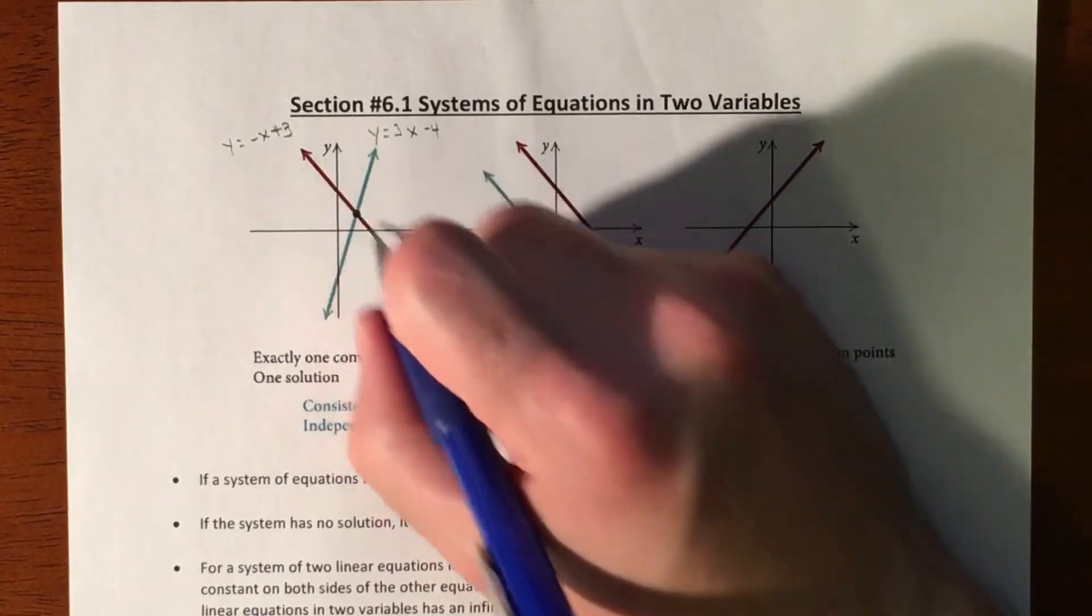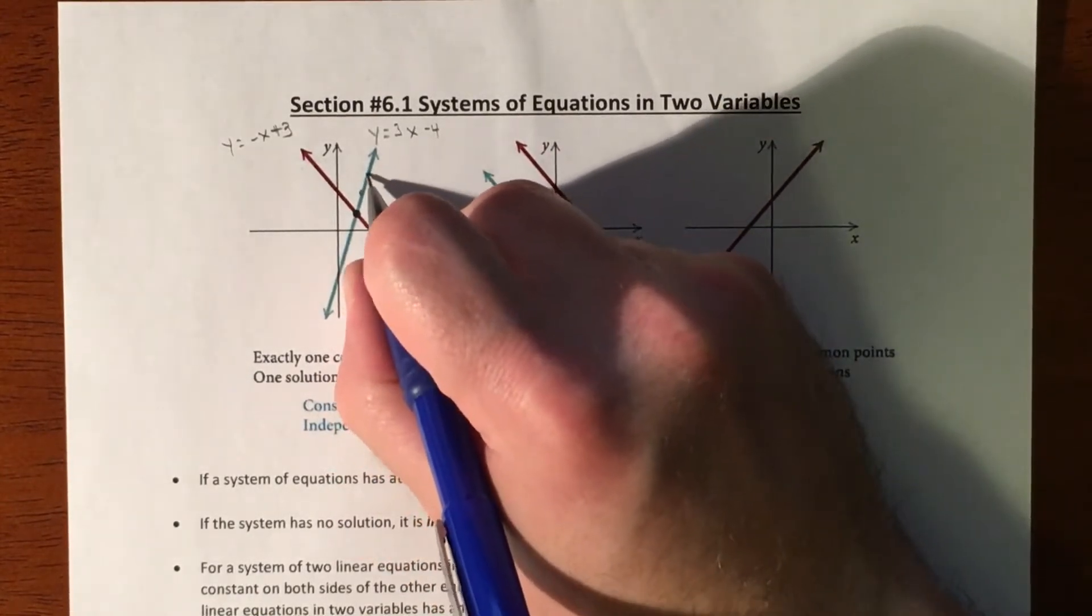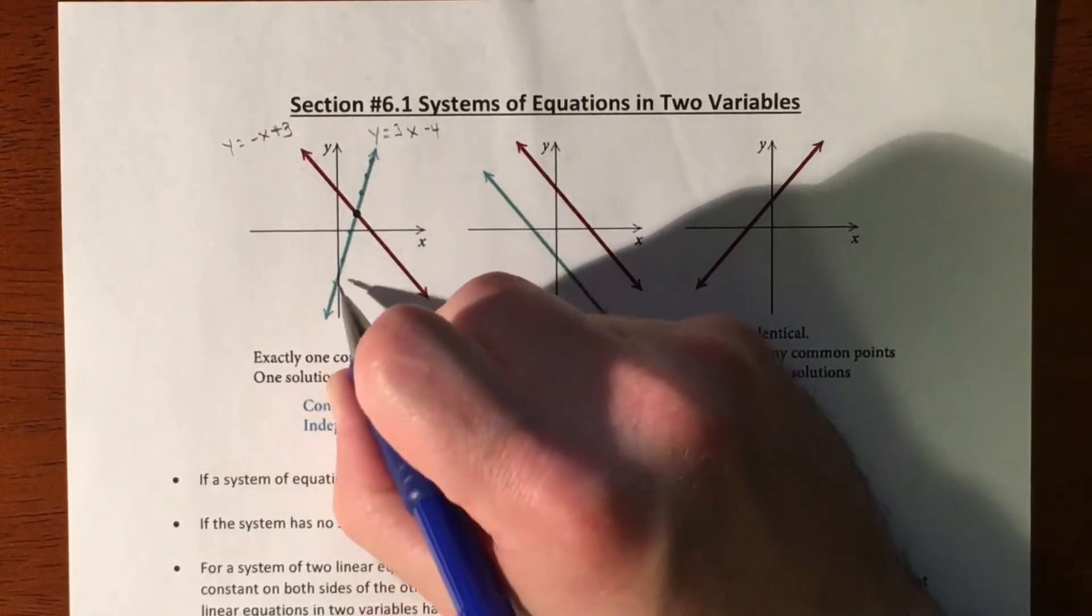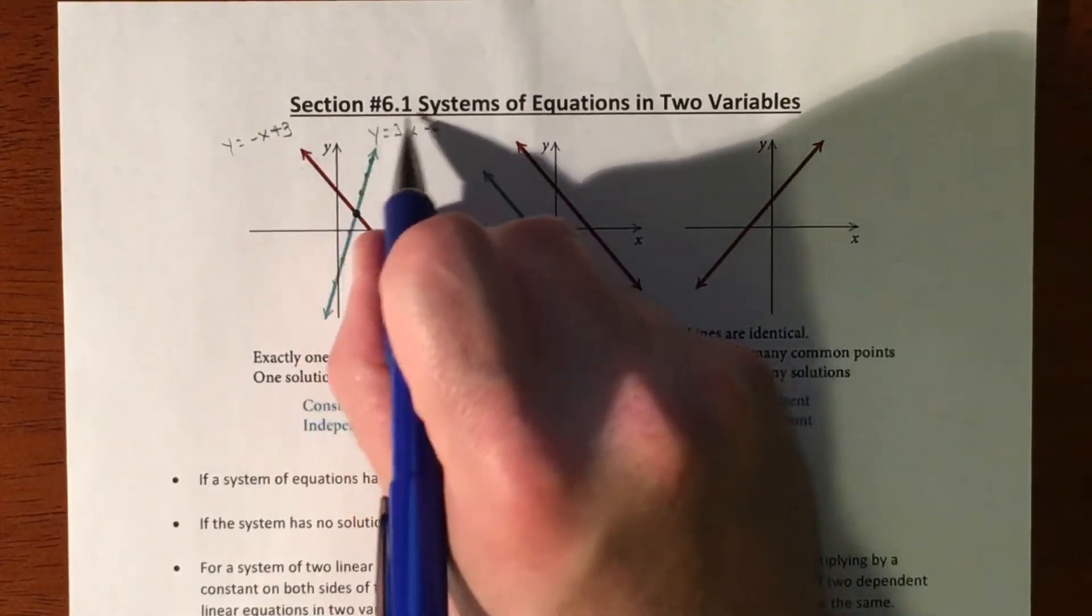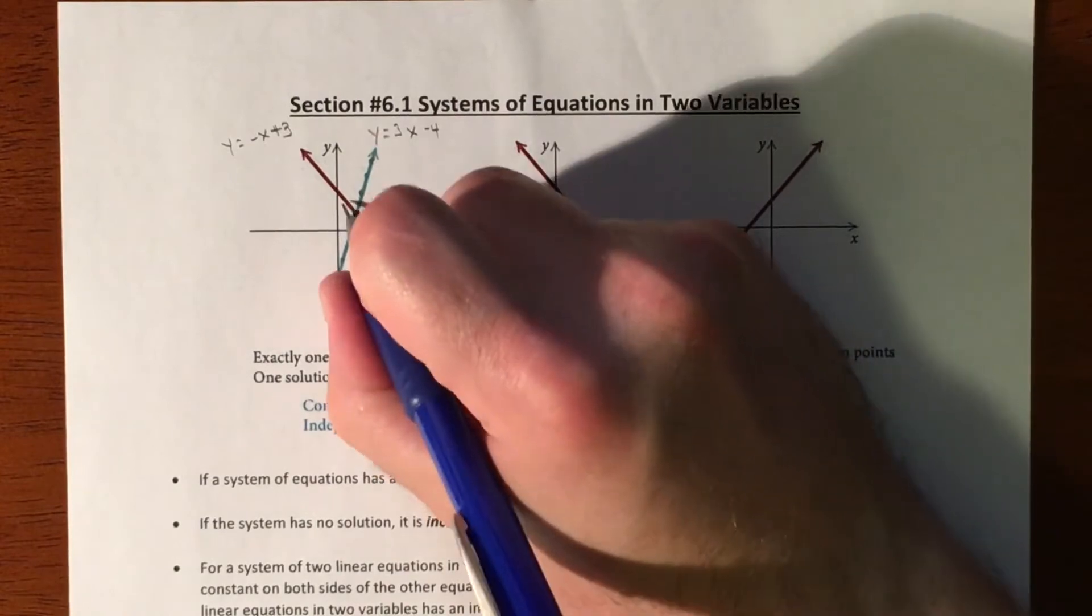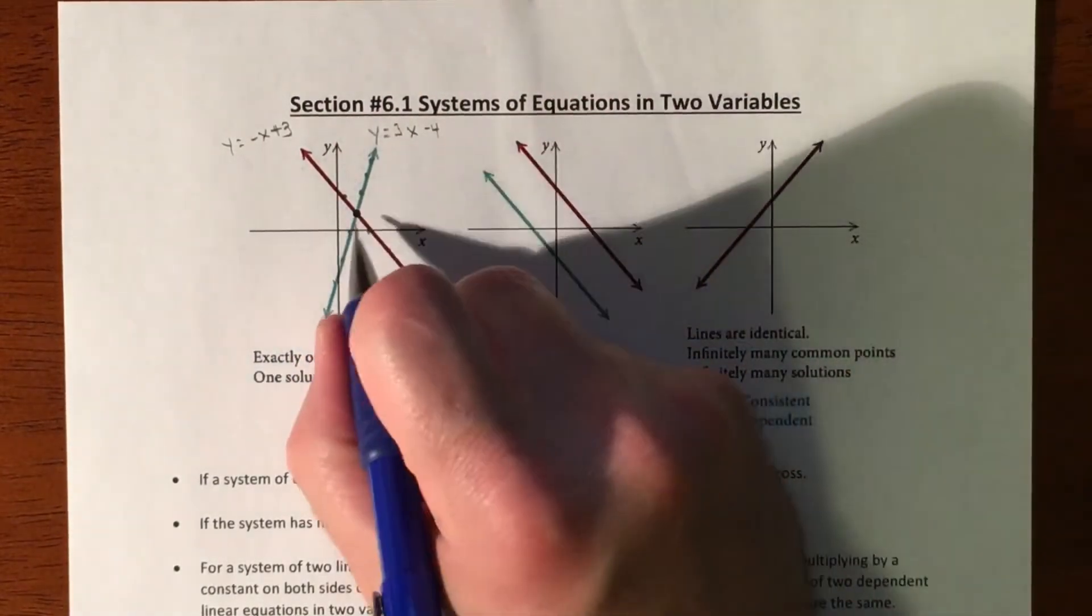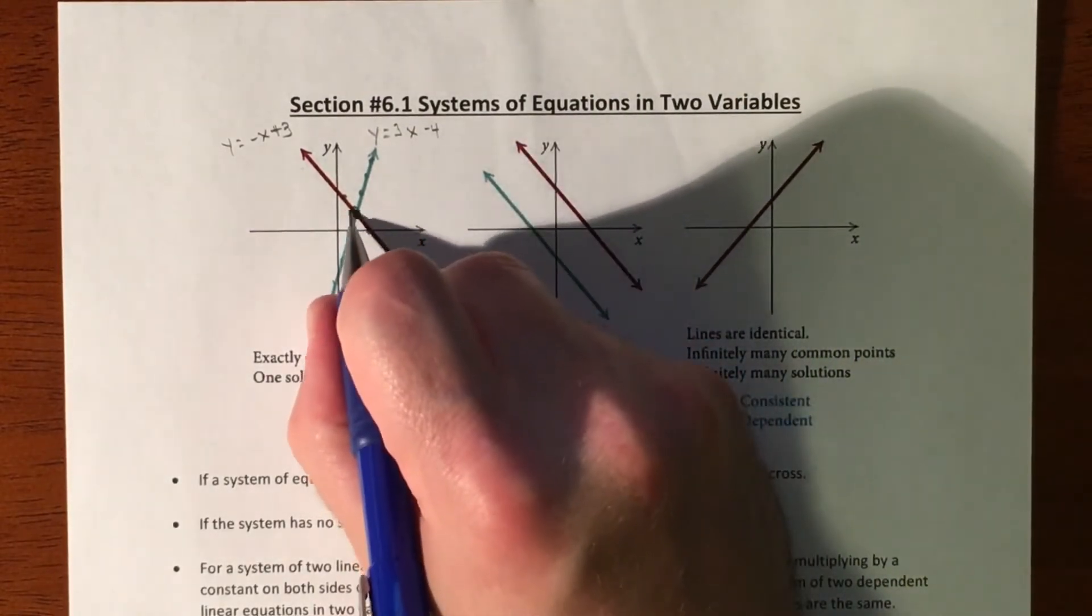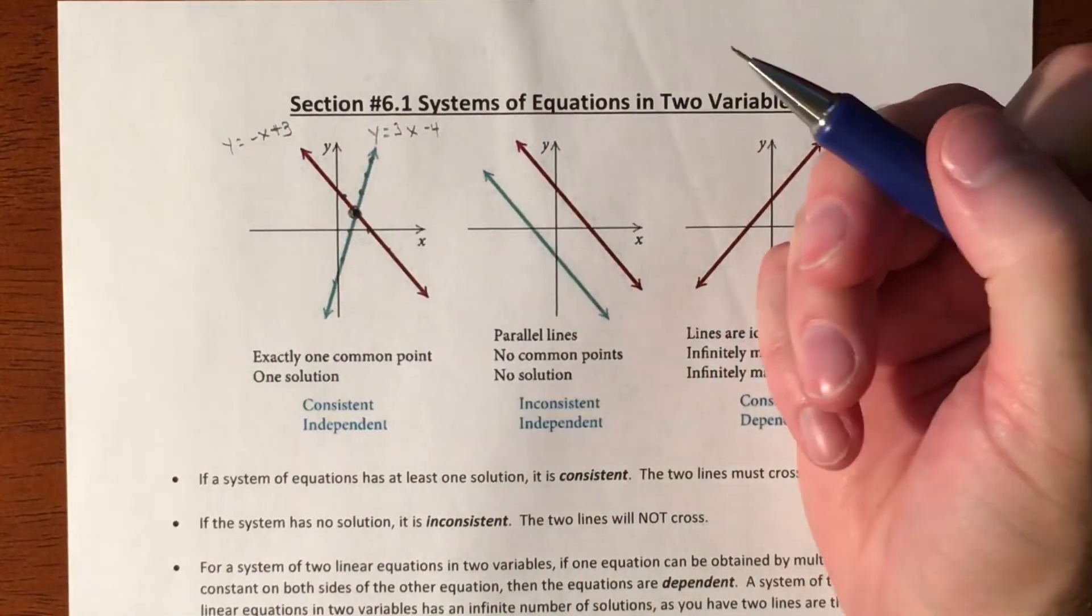Well, each line, you plot points and do the rise over run, you have all these different coordinates. All of those points on one line are solutions to one equation, and all the points on the other line are solutions to the other equation. What you're looking for is a point that satisfies both equations, and that is where they cross. That's your goal.